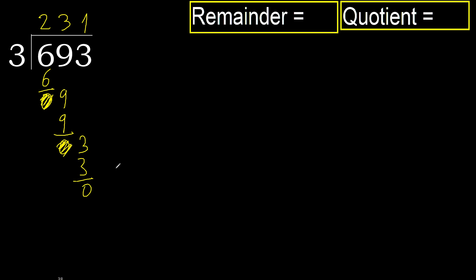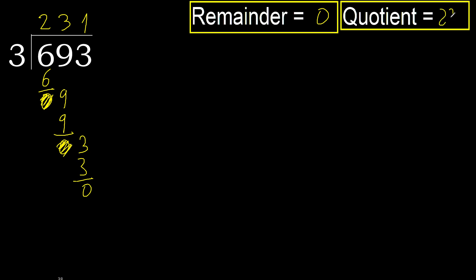There is no next number, therefore finish it. 0 — therefore 693 divided by 3 is here, and turn it around. See you all.